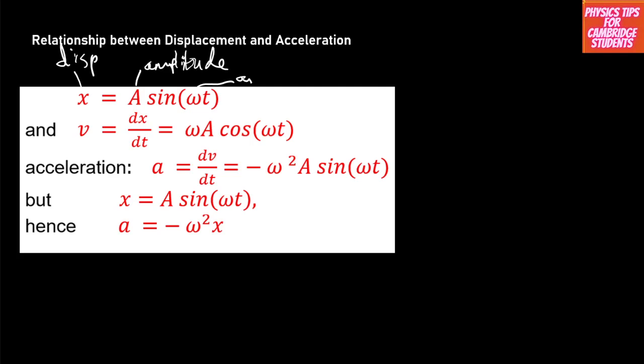If you differentiate that expression once, you get the velocity, which is dx/dt — differentiating with respect to time t. When differentiating, you first differentiate what's in the brackets with respect to t, you get omega. That omega multiplies the amplitude, becoming omega A. Then you differentiate the trig function: sine gives you cos. So it's going to be omega A cos(omega t).